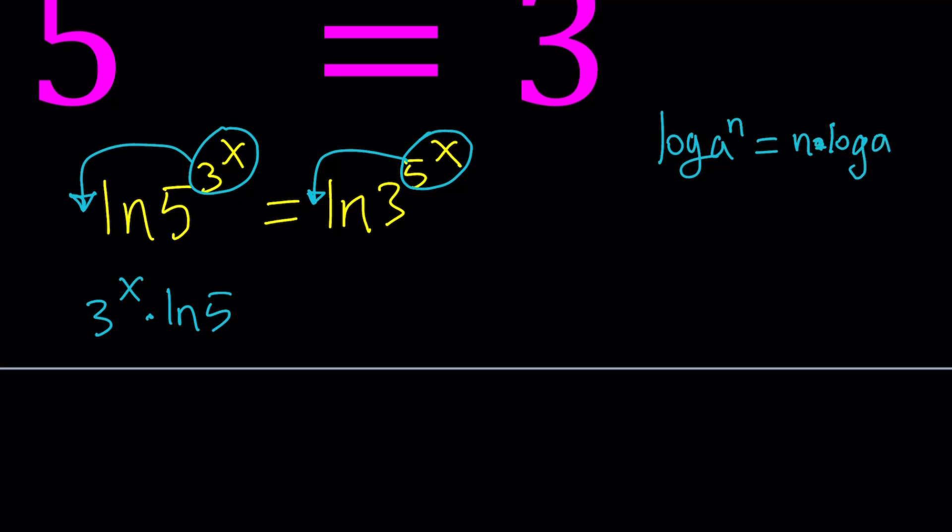If you go ahead and bring those to the front, you're going to get 3 to the power x multiplied by ln 5. We have a power rule. Remember that if you have log a to the power n, that could be written as n times log a. And we do the same thing on the right-hand side. Bring the 5 to the power x to the front and multiply by ln 3. Nice.